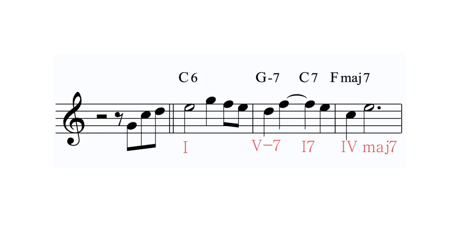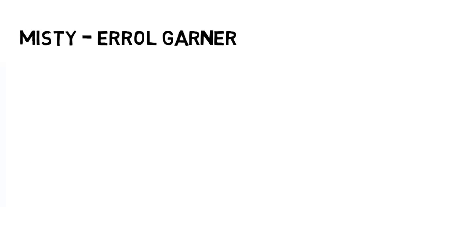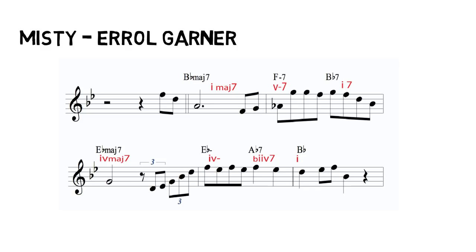If we label the chords with Roman numerals it can be very useful, as it can aid transposition a lot. Another example of this chord movement is in Erroll Garner's classic 'Misty,' sung here by Ella Fitzgerald.